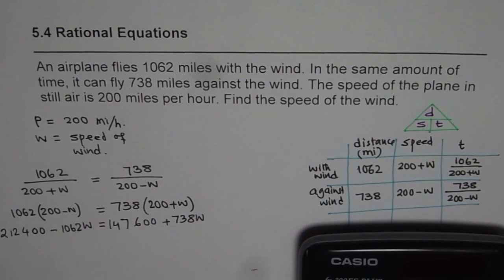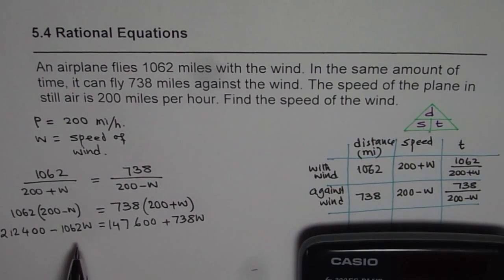Plus 738w. So now we have a linear equation which is in one variable, which is velocity of wind we need to find.